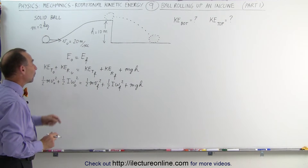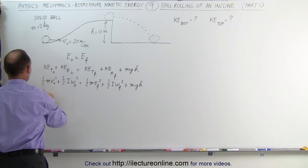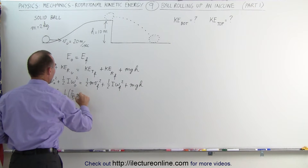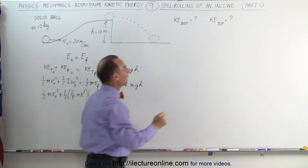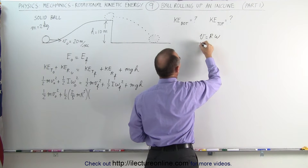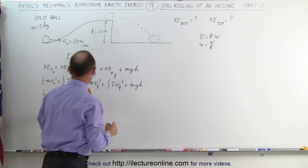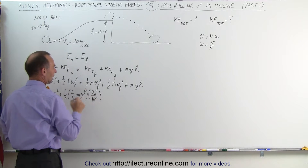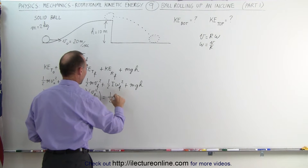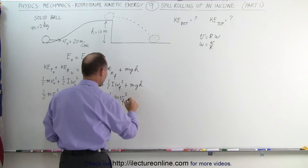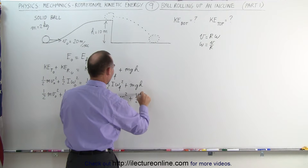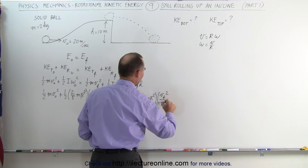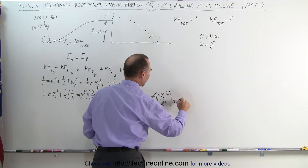Now we're going to substitute for I and omega. For a solid ball, I equals two-fifths MR squared. And remember the relationship that V equals R times omega, so omega equals V over R. Omega squared becomes V squared over R squared, so the R squared terms cancel out. The same substitution applies on the final side, giving one-half MV final squared plus one-half times two-fifths MR squared times V final squared over R squared, and the R's cancel again, plus MGH.